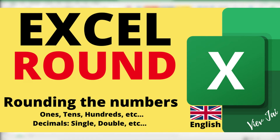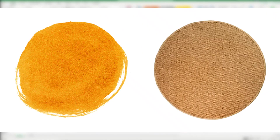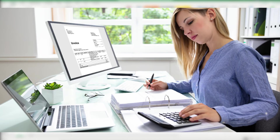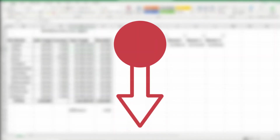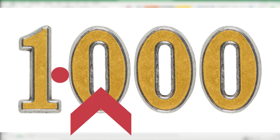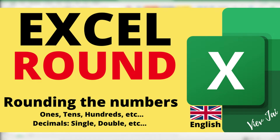Hello everyone, today we are going to learn about the ROUND function in Excel. It does not make objects round — what it does is especially useful for anyone doing accountancy or anything related to that. It rounds up or rounds down values to the nearest ones, tens, thousands, or to one, two, or three decimal places and so on.